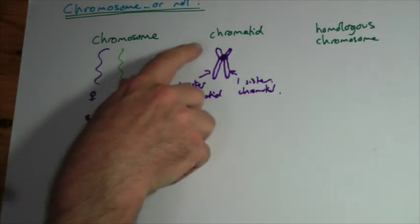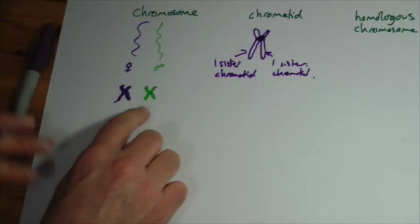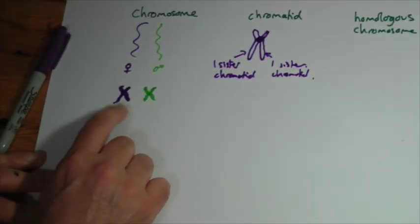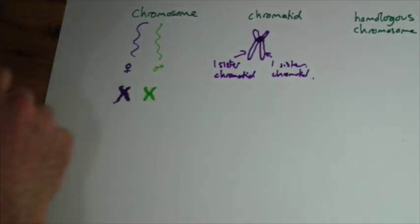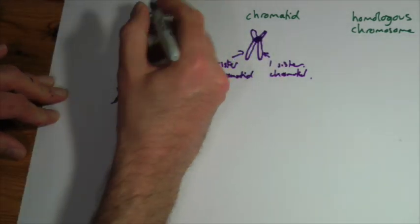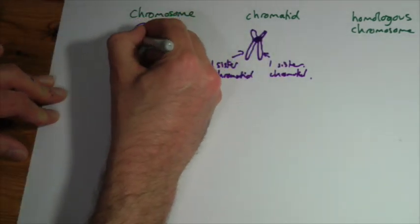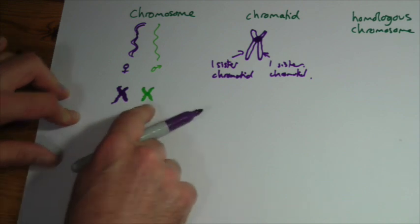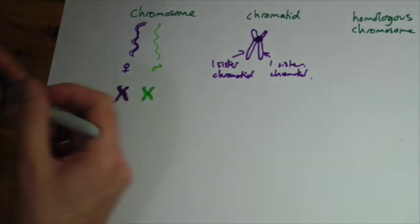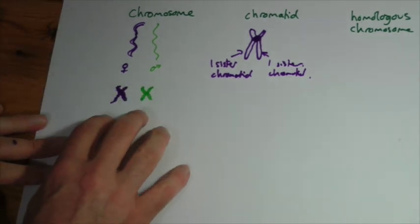So a chromatid is each individual strand. Remember that these strands are actually formed during interphase, although you wouldn't see them again. When they form they would sit next to each other but they'd both be very long strands. It only takes on this X shape when it super coils, when it condenses just prior to cell division.